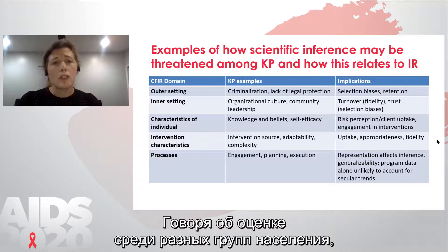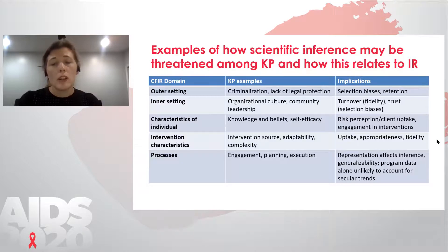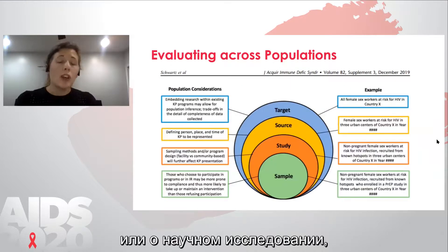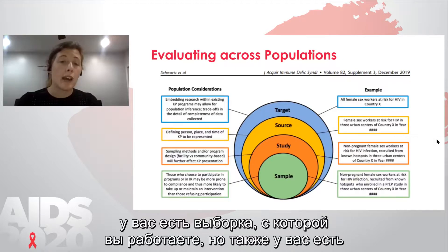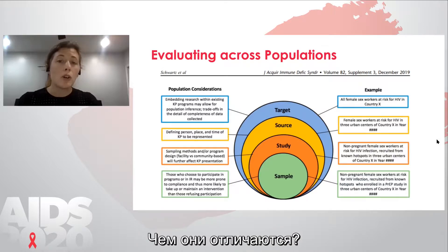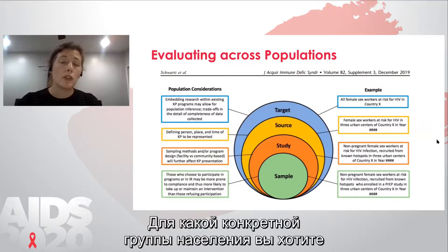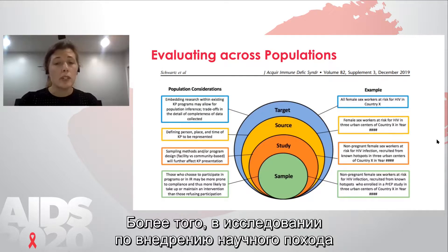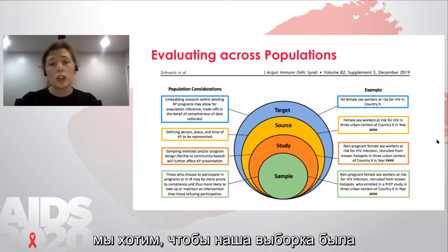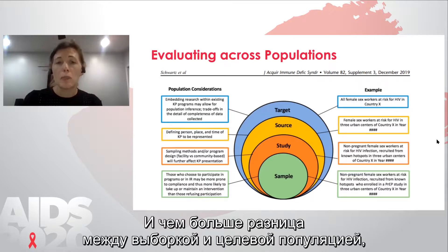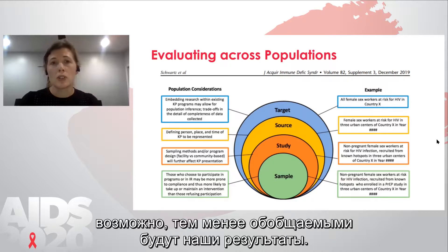In terms of evaluating across populations, when you are implementing a program with key populations or thinking about a research study, you have a sample that you're working with, but you also have individuals that may have been eligible and chose not to participate. How are those individuals different? Also, who wasn't eligible to participate? And who is the population that ultimately you want your results to apply to — your target population? Increasingly with implementation science research, we want our sample population to look ever more closely like our target population. The greater the difference between our sample and our target population, perhaps the less generalizable our results will be.